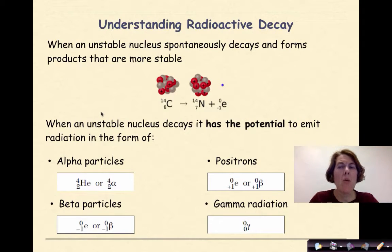What is radioactive decay? Radioactive decay is when an unstable nucleus spontaneously decays and forms products that are more stable. So remember, we talked about stability with nuclei and stability means that our proton to neutron ratio will be closer to one to one.